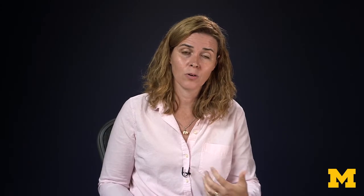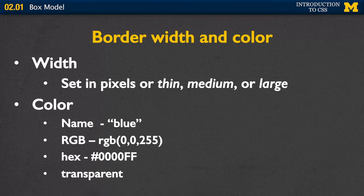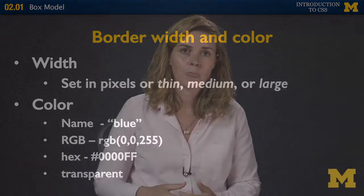Once you've decided what kind of style you want, you can specify the width and color. For width, you can set it in a number of pixels or use the keywords thin, medium, or large. For color, you can use the name such as blue, the RGB value, the hex value, or transparent so it takes the color of whatever's underneath it.